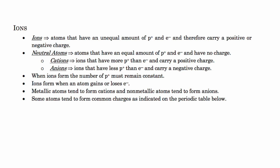Let's take a look at ions. Because electrons can move in and out of the atom, they create what are called ions. The electron has a negative charge and the proton has a positive charge. So if you have an equal number of protons and electrons, you have a neutral atom — the charges cancel out: plus one and minus one gives you a zero charge.